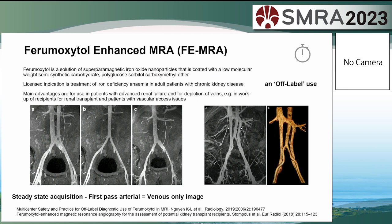Ferumoxytol can do the same. It's an iron-based USPIO that stays intravascular. We use it in patients with advanced renal failure in whom our renal physicians don't want us to use gadolinium-based contrast agents. We've developed a clinical program for suitable patients with this agent, particularly for venous imaging and for planning renal transplant — because surgeons want to see both arteries and veins, not just the arterial side.